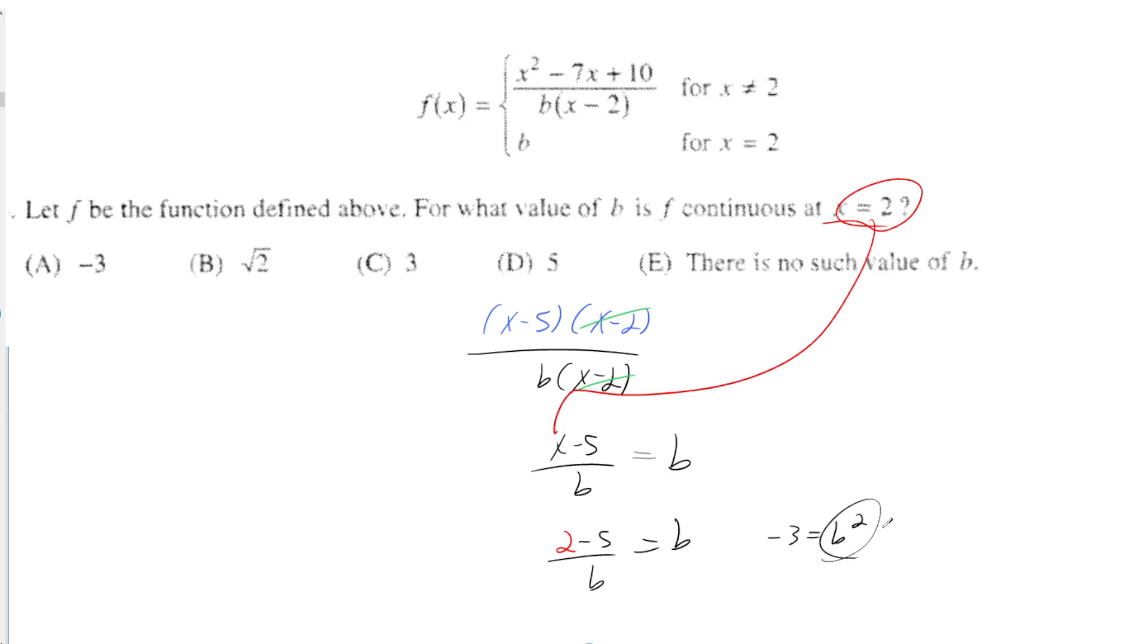Uh-oh! A square is coming out to a negative? That's not going to allow for a real number solution. So it turns out there is no such value for b. See ya!